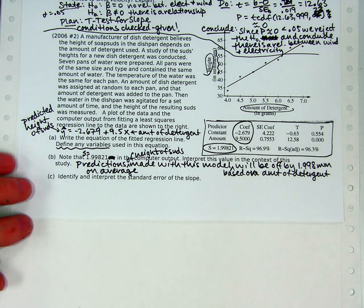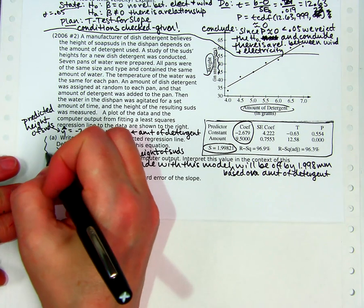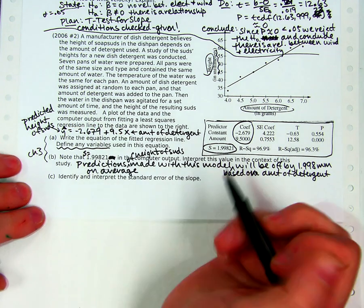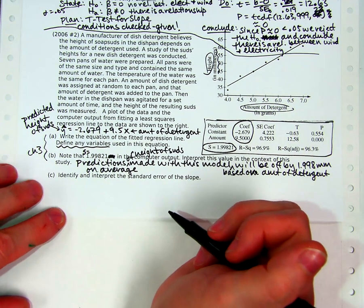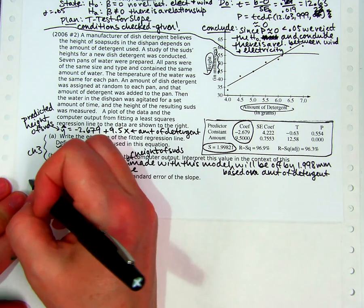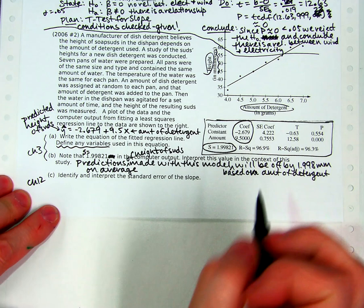And then last but not least, the first two are definitely Chapter 3. The last one isn't even a significance test, but it's still categorized as Chapter 12, because it was in Chapter 12 that we learned about the standard error of the slope. So let's talk about standard error.